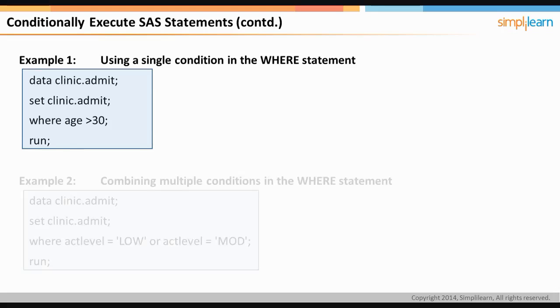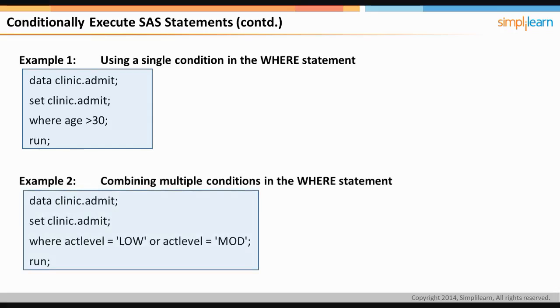In the next example, we combine two comparisons using the OR operator. Here, only those observations from dataset clinic.admit which have ACT level either low or mod will be processed. Next, we will discuss the IF-THEN-ELSE conditional operator.